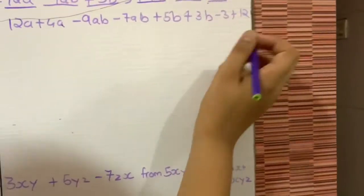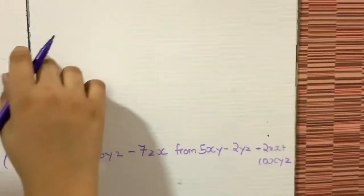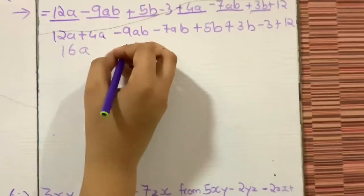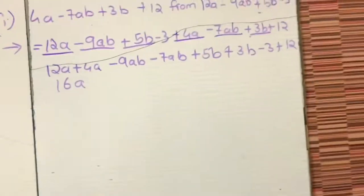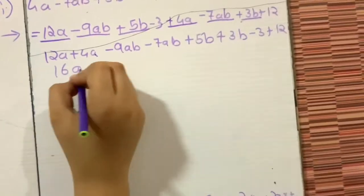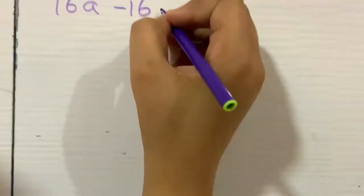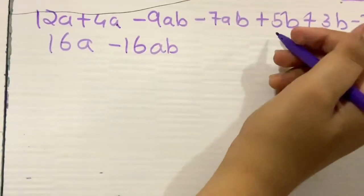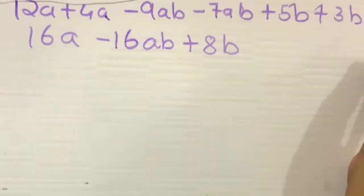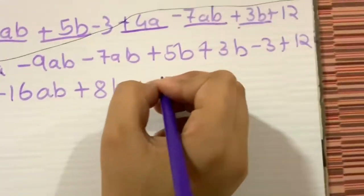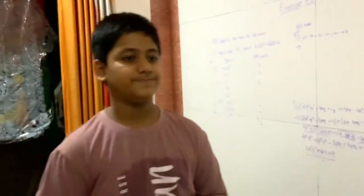Now let us calculate. Plus plus gives 12a + 4a = 16a. For minus 9ab minus 7ab: minus minus gives plus, but we add them, so since 9 is greater the result is minus 16ab. For plus 5b plus 3b: that gives plus 8b. For minus 3 plus 12: the greater sign belongs to plus 12, so the result is plus 9. So the final answer is 16a − 16ab + 8b + 9.